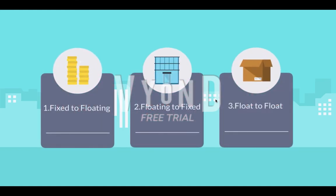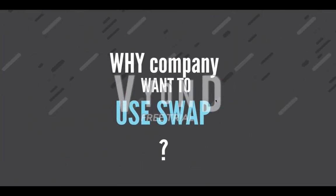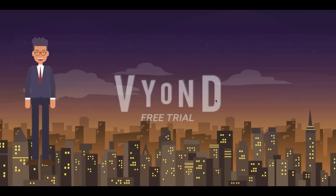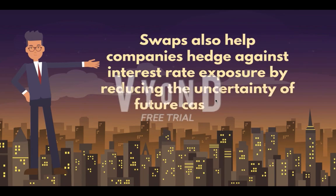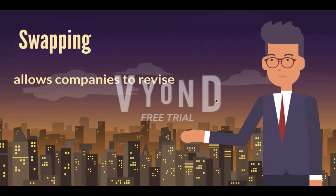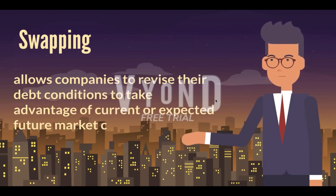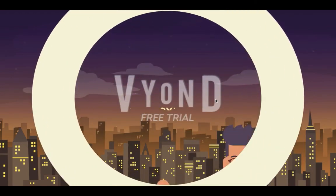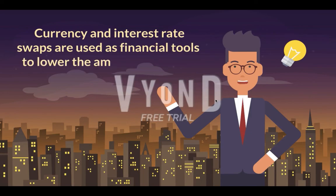The types of interest rate swap include: fixed to floating, floating to fixed, and float to float. Companies also use swaps to hedge against interest rate exposure by reducing the uncertainty of future cash flows. Swapping allows companies to revise their debt conditions to take advantage of current or expected future market conditions. Currency and interest rate swaps are used as financial tools to lower borrowing costs.